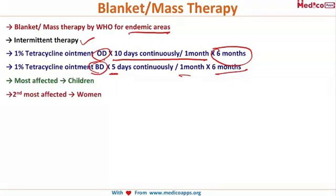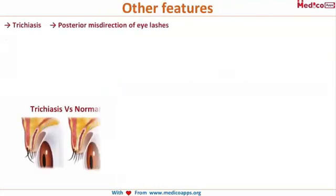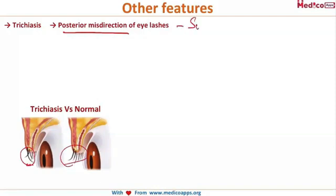Children are the most affected and women are the second most affected by trachoma. Among other features is trichiasis — posterior misdirection of eyelashes. Surgery is the management for trichiasis as seen in the SAFE strategy.